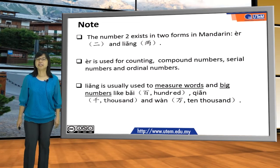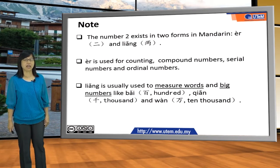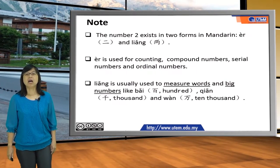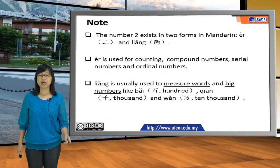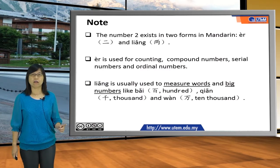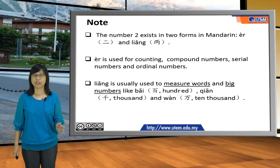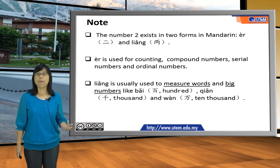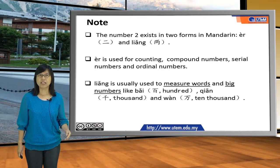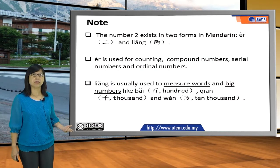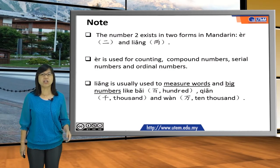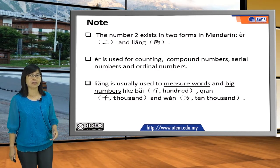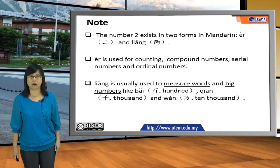This is the difference between 二 and 两. 二 is used for counting — for example, 一、二、三. It is also used for compound numbers, such as 二十二; serial numbers, such as telephone numbers; and ordinal numbers, for example, 第二 means 2nd.